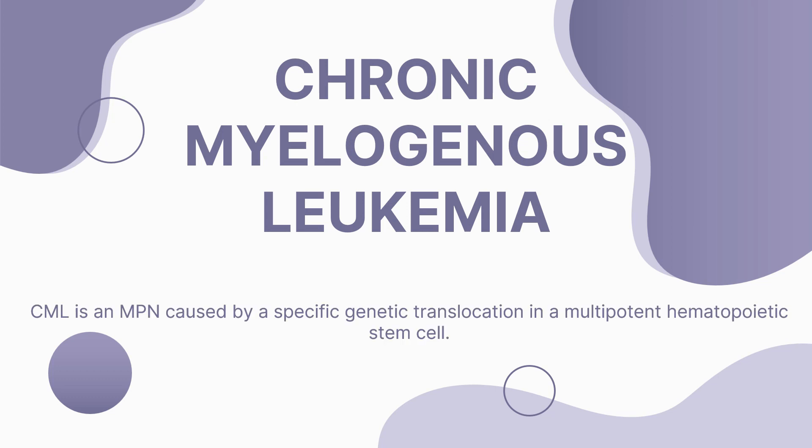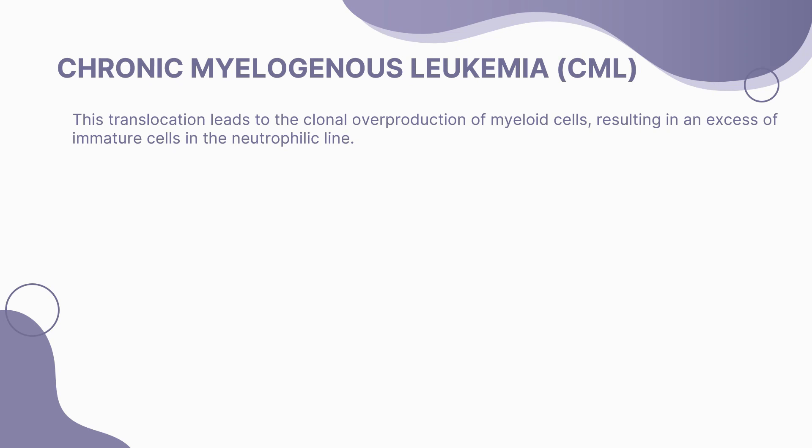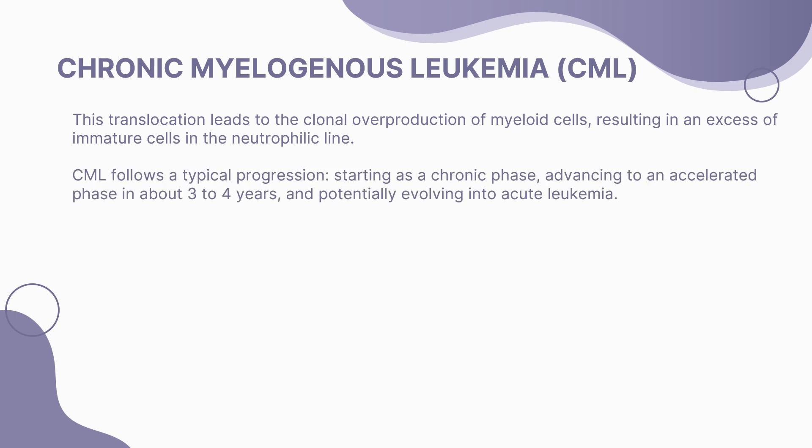Chronic myelogenous leukemia, or CML, is a specific type of myeloproliferative neoplasm. CML is caused by a unique genetic translocation in a multipotent hematopoietic stem cell, leading to a clonal overproduction of myeloid cells, resulting in an excess of immature cells in the neutrophilic line. The disease follows a distinctive progression, starting as a chronic phase, advancing to an accelerated phase in about 3-4 years, and potentially evolving into acute leukemia.